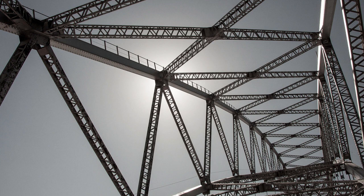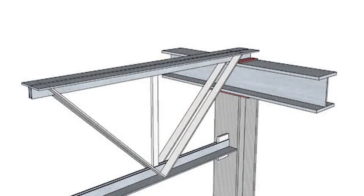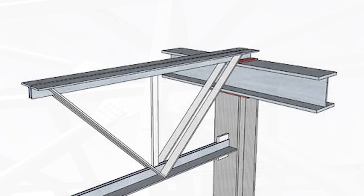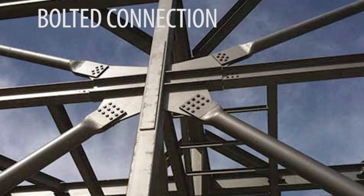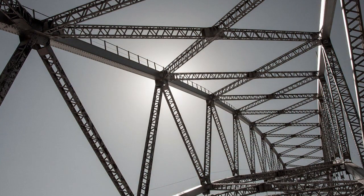Even in concrete structures, steel is used as reinforcement. But here we will talk about steel design — structures completely made with steel, except the foundation, which is obviously made of concrete. Steel structures are a combination of different individual members: beams, columns, bracings — all connected to each other with the help of either bolts or welds, transferring the load from the top to the foundation.